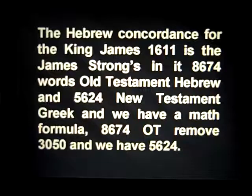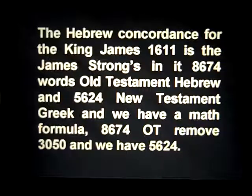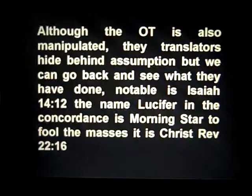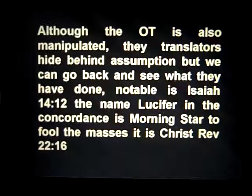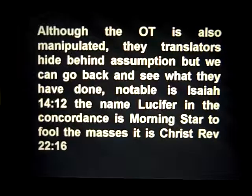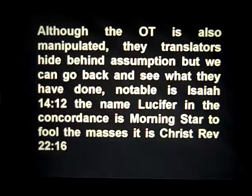This gives us a mathematical formula: 8,674 in the Old Testament, remove 3,050, and that leaves us with 5,624. Although the Old Testament is also manipulated, the translators hide behind assumption, but we can go back and see what they have done. Most notable is Isaiah 14:12 and the name Lucifer — in the concordance it is 'morning star.'